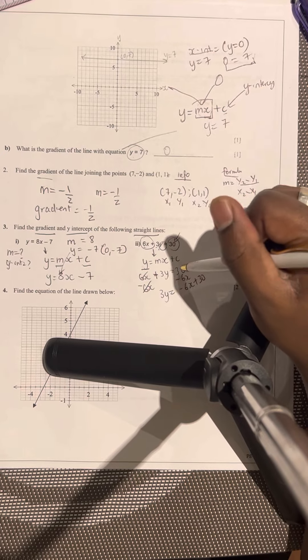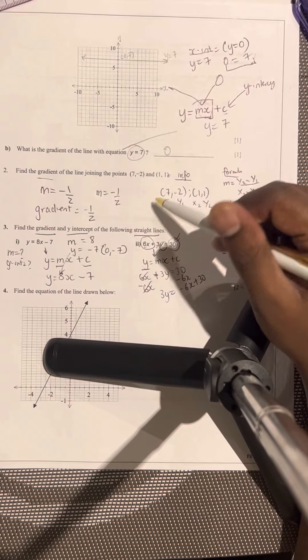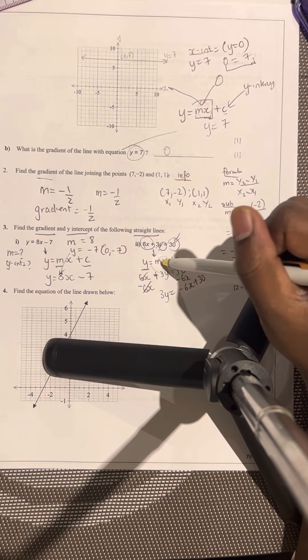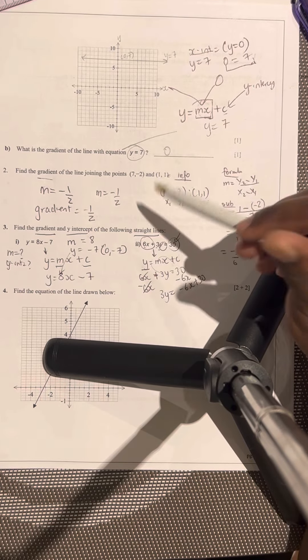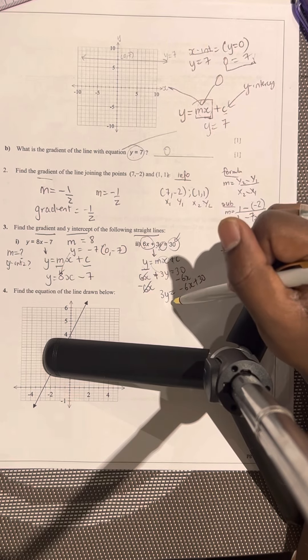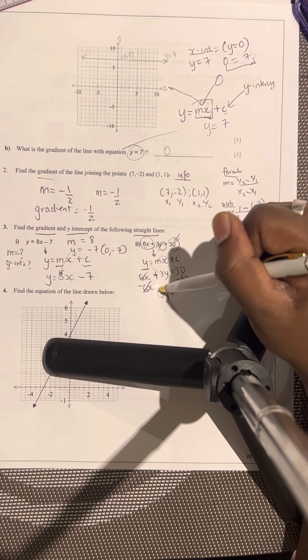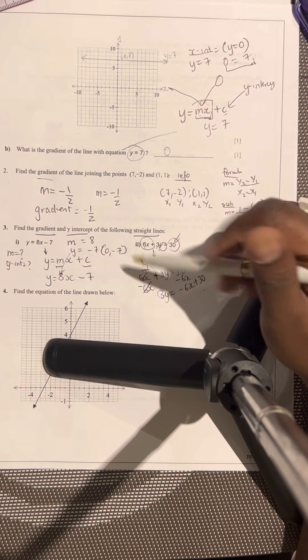Okay. Some people might write it as 30 minus 6x. But I would want to put it in this particular format, which means mx plus c format. In the equation of the line, you still have y equals mx plus c. This is not y equals mx plus c yet. Why? Because the 3 is there.